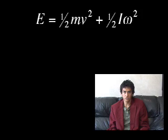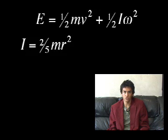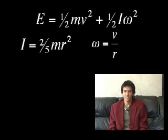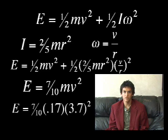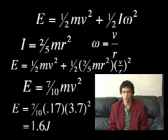The total energy of the cue ball equals 1.5 mv squared plus 1.5 i omega squared. The rotational inertia of a sphere is 2 fifths mr squared. After some simplification you get 7 tenths mv squared. After plugging in our mass and velocity values, we get the total energy to be 1.65 joules.